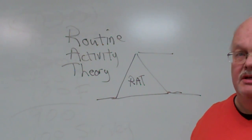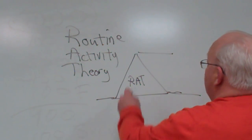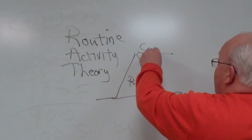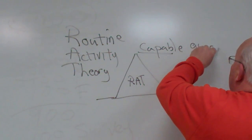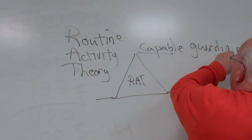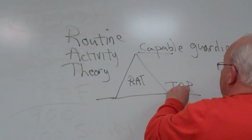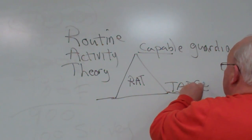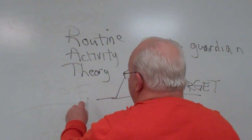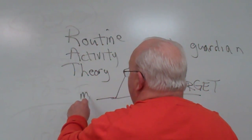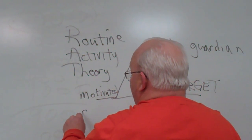Routine activity theory consists of three parts, shown in this triangle. An important part is capable guardian, and the critical part is a target. And then what we have over on this side is basically motivated offender.